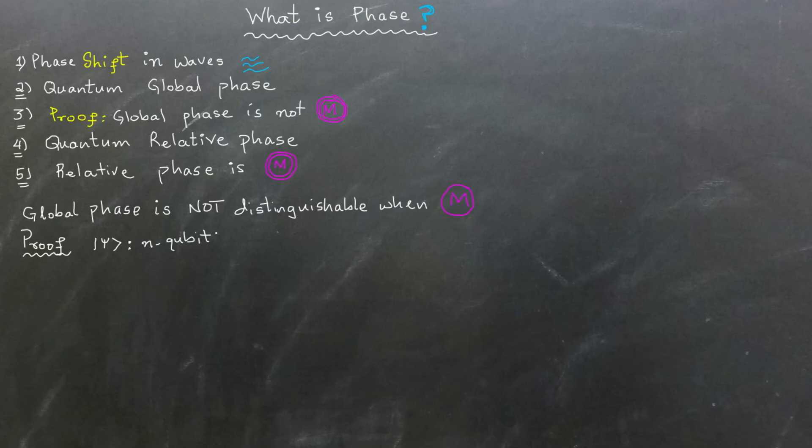Given an n-qubit register ket psi and any orthonormal basis beta 1, beta 2, dot dot dot beta n, the probability of outcome beta i, where i ranges from 1 to n, is equal to ket psi conjugate transpose times M beta i times ket psi.